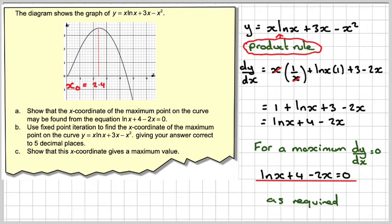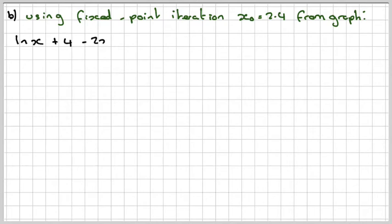And then we're going to rearrange this. There's more than one rearrangement. Some might converge quicker than others, or some might even diverge. So using fixed point iteration, x0 equals 2.4 from the graph.